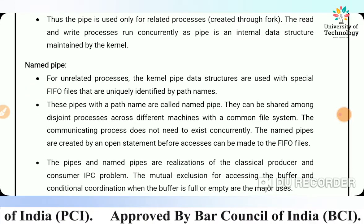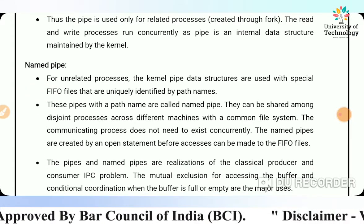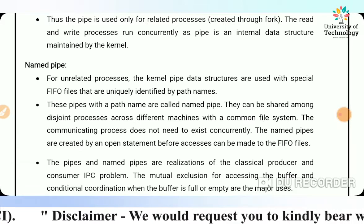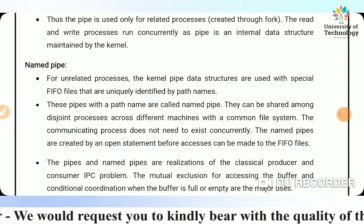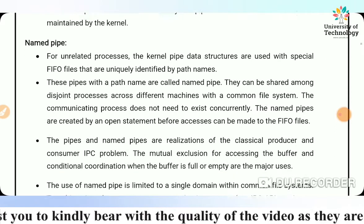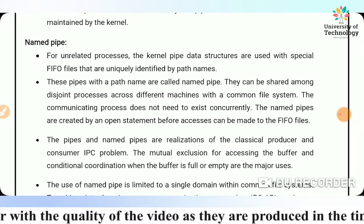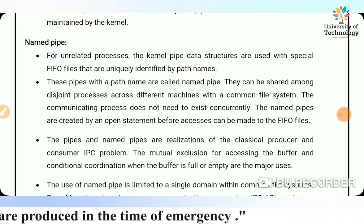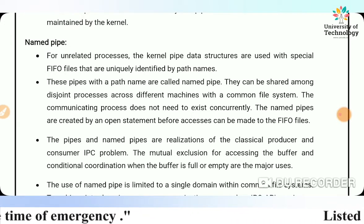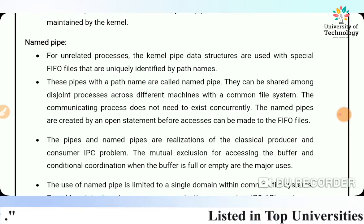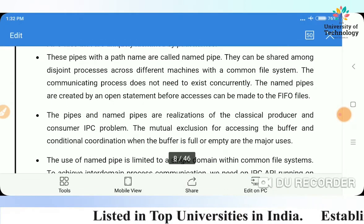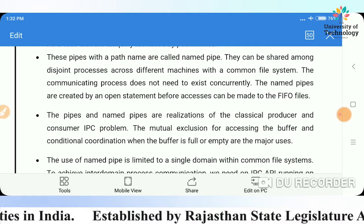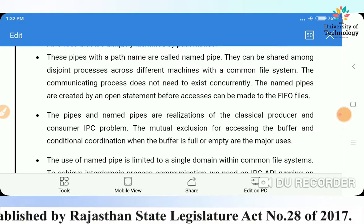Named pipes use a special FIFO (first-in, first-out) file uniquely identified by path names. These pipes with a path name are called named pipes. They can be shared among processes across different machines with a common file system. The communicating processes do not need to exist concurrently. Named pipes are created by an open statement before access can be made to the FIFO files.